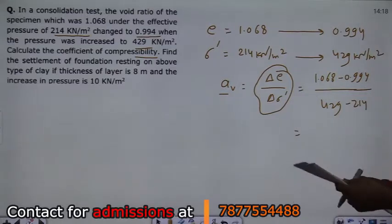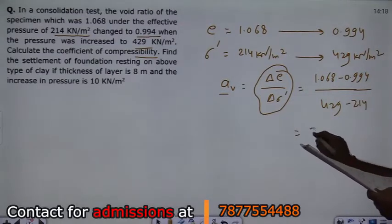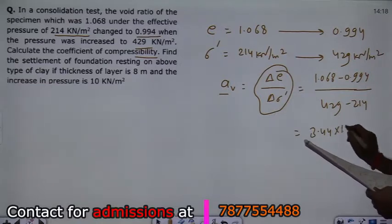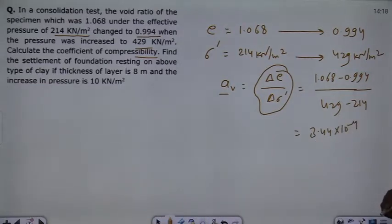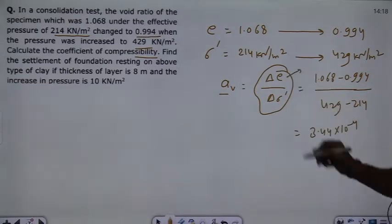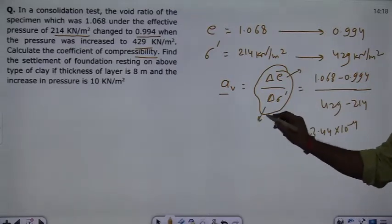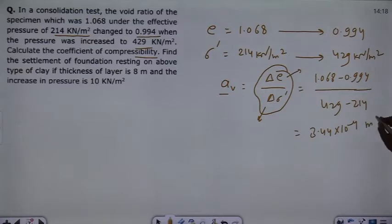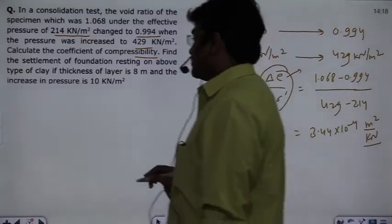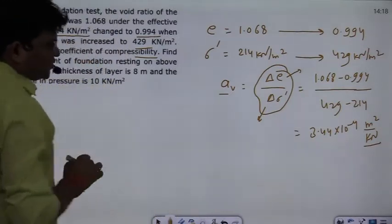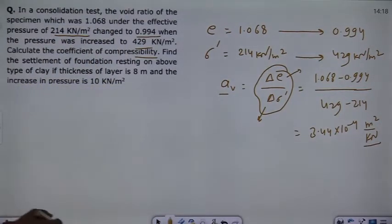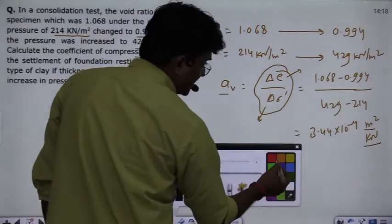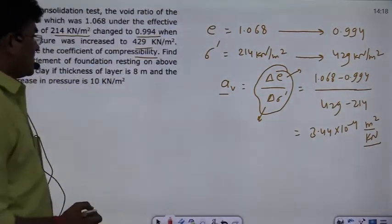So if you solve this, the result is 3.44 into 10 raised to the power minus 4. This will be the answer for the first part.